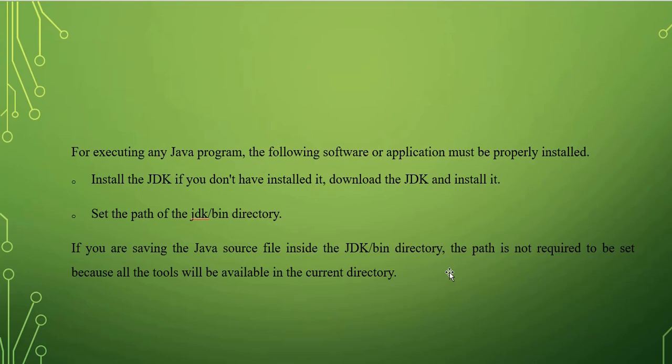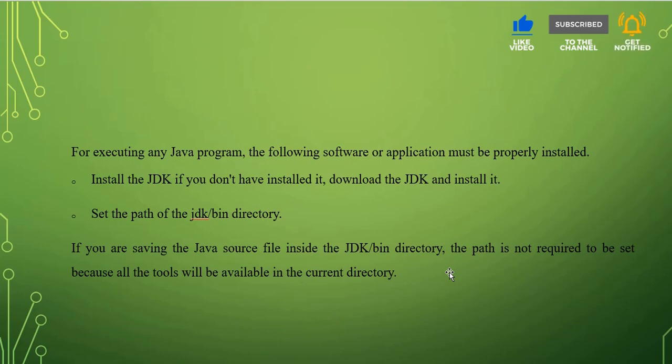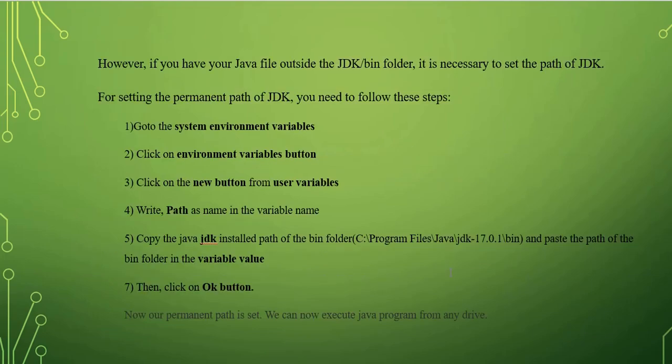For executing any Java program, the following software must be properly installed. Go to the browser, search for the JDK latest version, download JDK and install it properly. If you are saving the Java source file inside the JDK bin directory, there is no need to set the path, because all the tools will be available in the current directory.